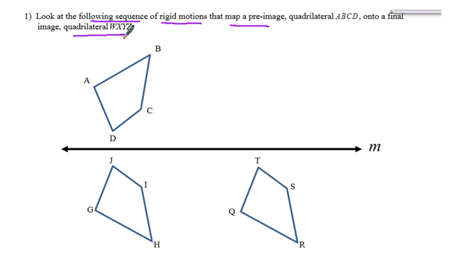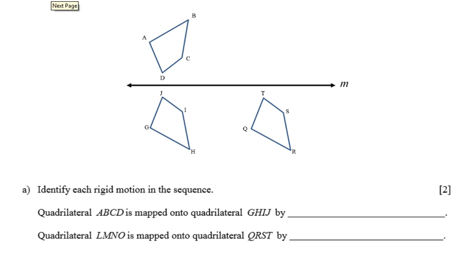And let's take a look and see what's going on with this problem. Okay, the first thing we need to do is identify the rigid motions that take one figure onto another. So it says ABCD is mapped onto GHIJ by something. And so really what we're doing is we're asking what will map this figure onto there.